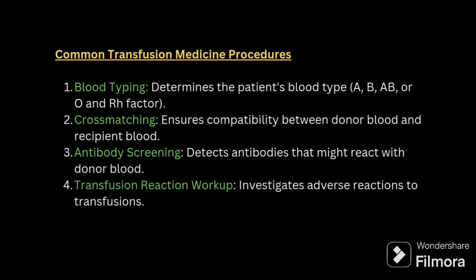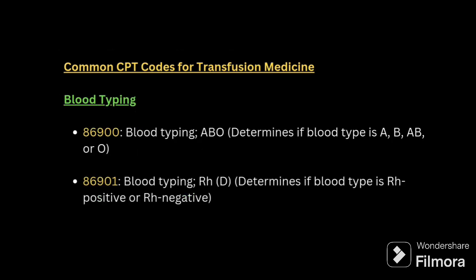Common transfusion medicine procedures include blood typing — A, B, AB, or O and RH factor — cross matching, which involves donor blood and recipient blood, and antibody screening to detect antibodies that may react.